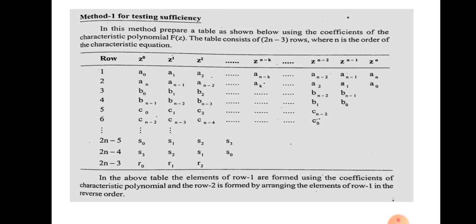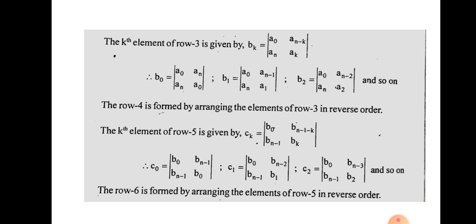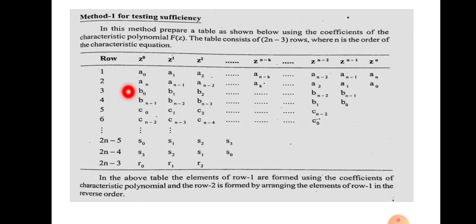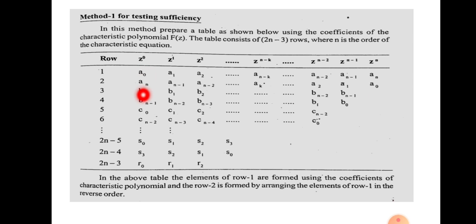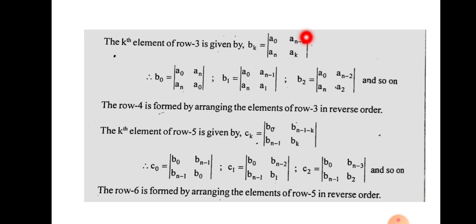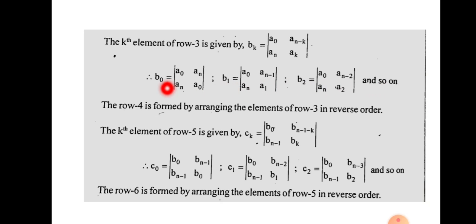The third row elements B0, B1, B2, ... BN-1 are found using: BK = det([A0, AN; AN-K, AK]). So B0 = det([A0, AN; AN, A0]) and B1 = det([A0, AN; AN-1, A1]), and similarly for other elements. The fourth row is formed by reversing the third row: BN-1, BN-2, ... B0. All even-numbered rows are formed by reversing the odd-numbered row just above them.